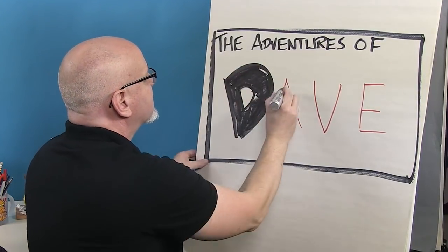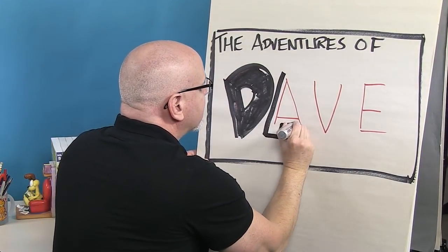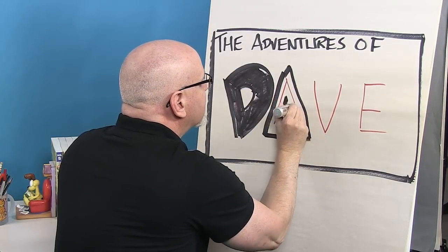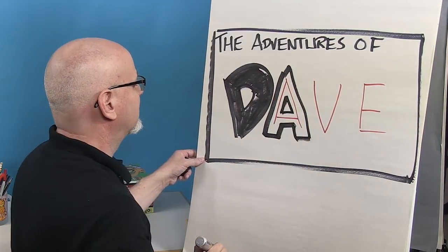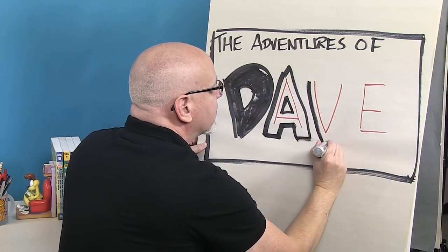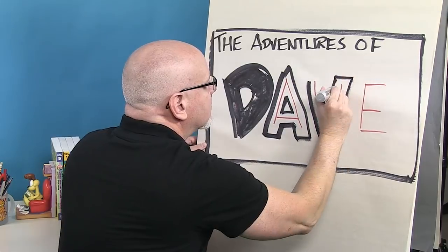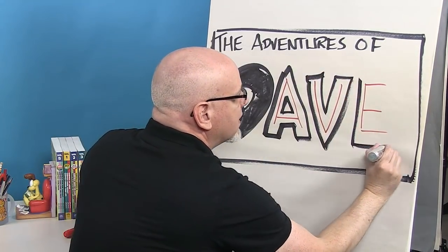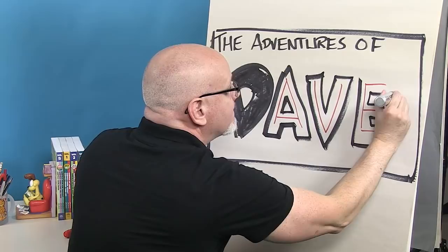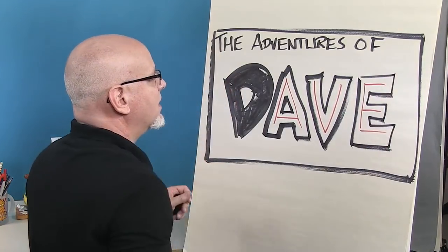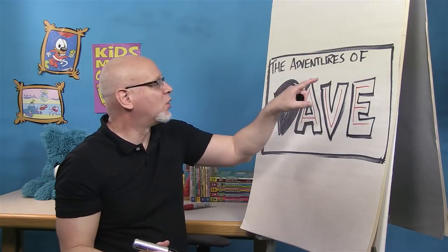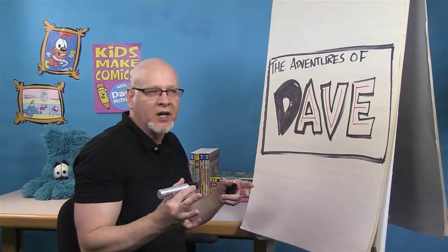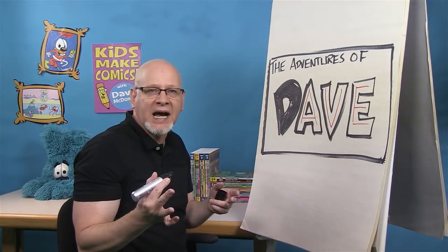And let's see — the letter A, trace around the A, trace inside of this little space. Around the V. And around the E. Okay, there you have it. These are big bold blocky letters. You could also do something to your letters that's fun — it's called stylizing.